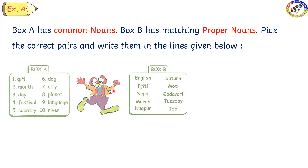Let us look at box A: girl, month, day, festival, country, dog, city, planet, language, river.